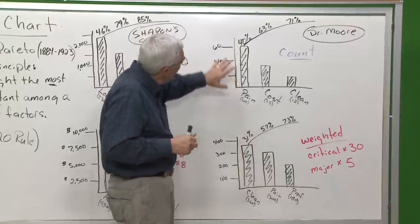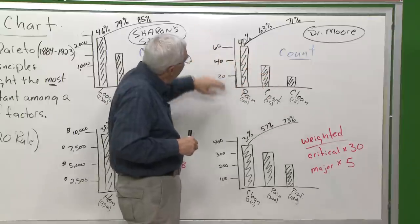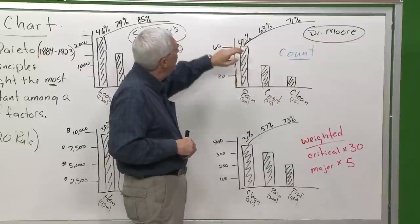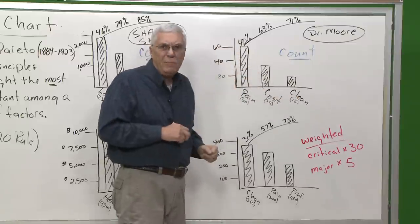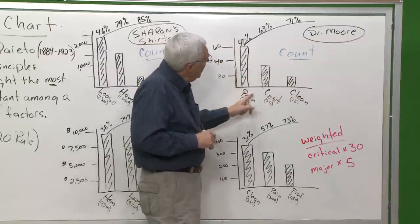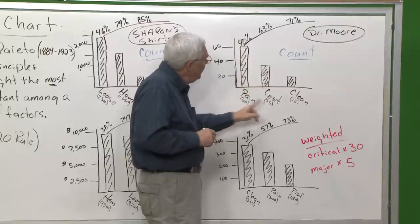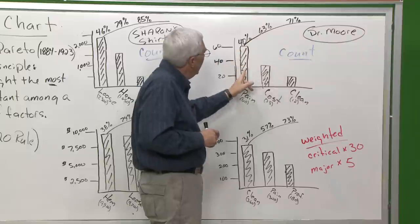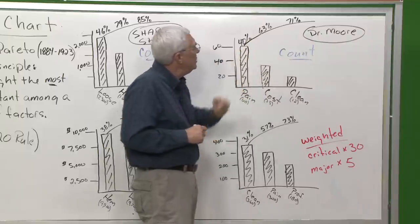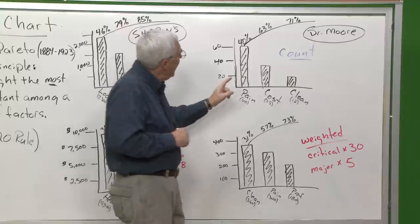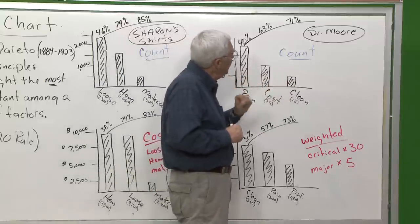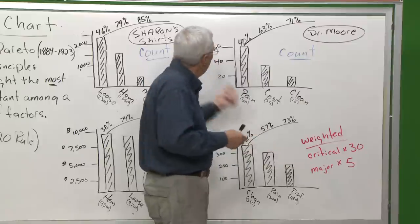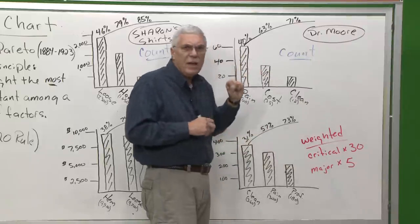So now we charted those. We put them in order and then we said, sixty divided by the grand total of complaints means that pain was 40% of patient concerns. Totaled these two together, ninety-five. Ninety-five divided by the total number of complaints said 63%, these two together represent 63% of all complaints. And then these three together represent 71% of all complaints. So it's exactly the same as Sharon's, it's complaints, it's a count of complaints.